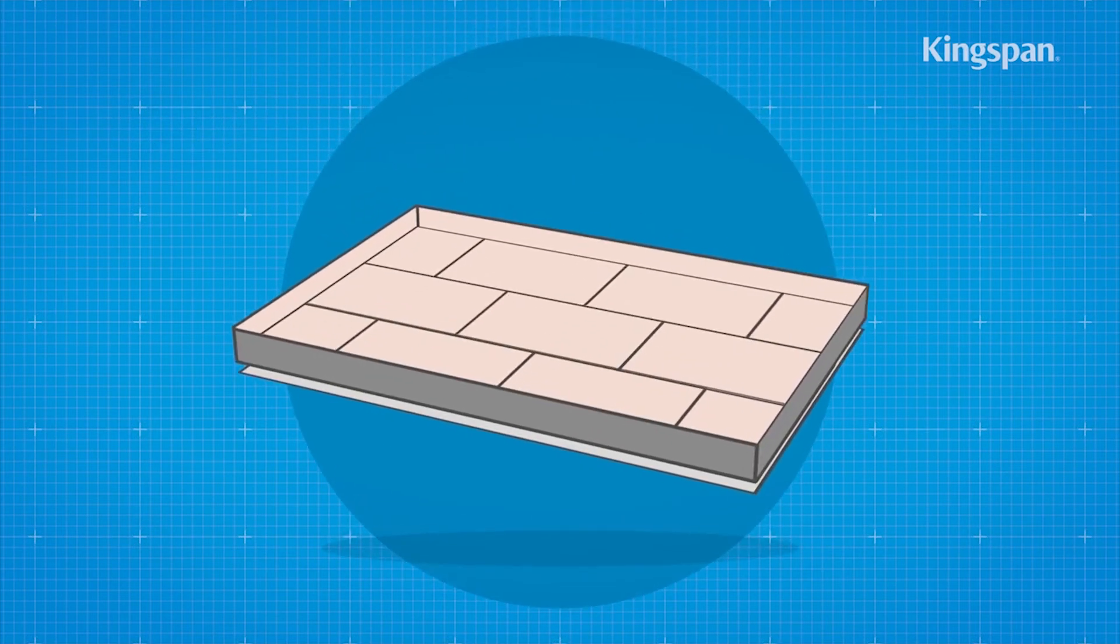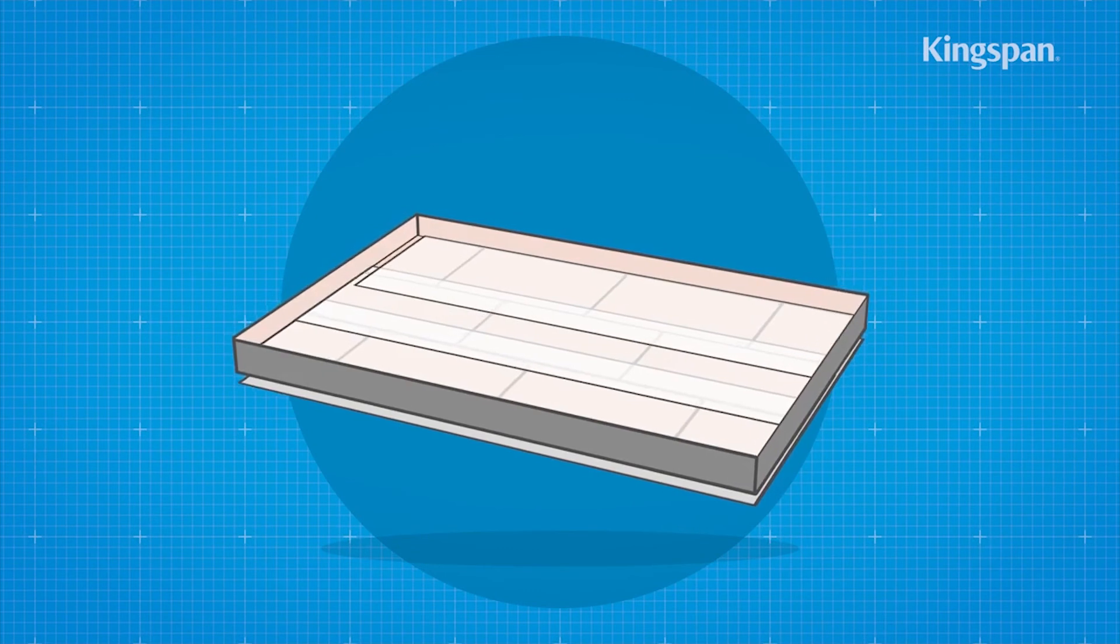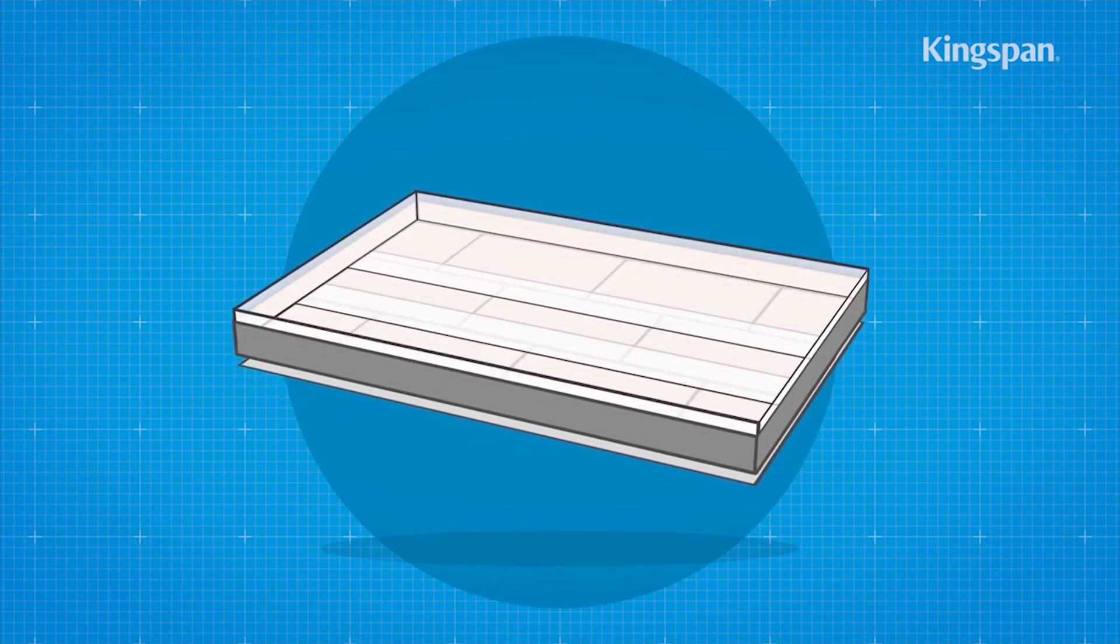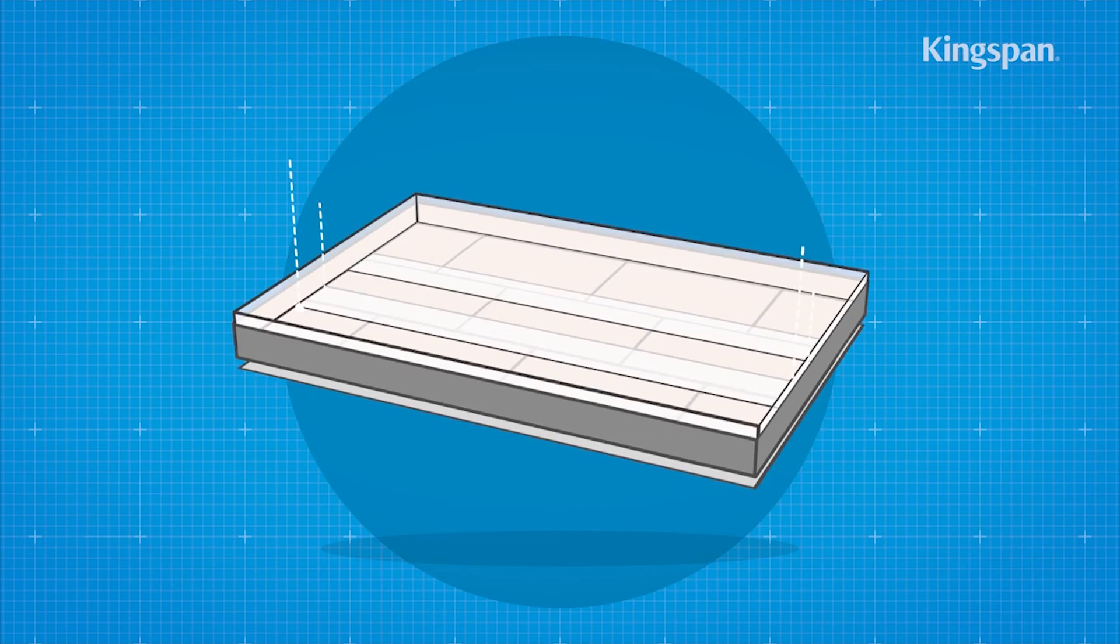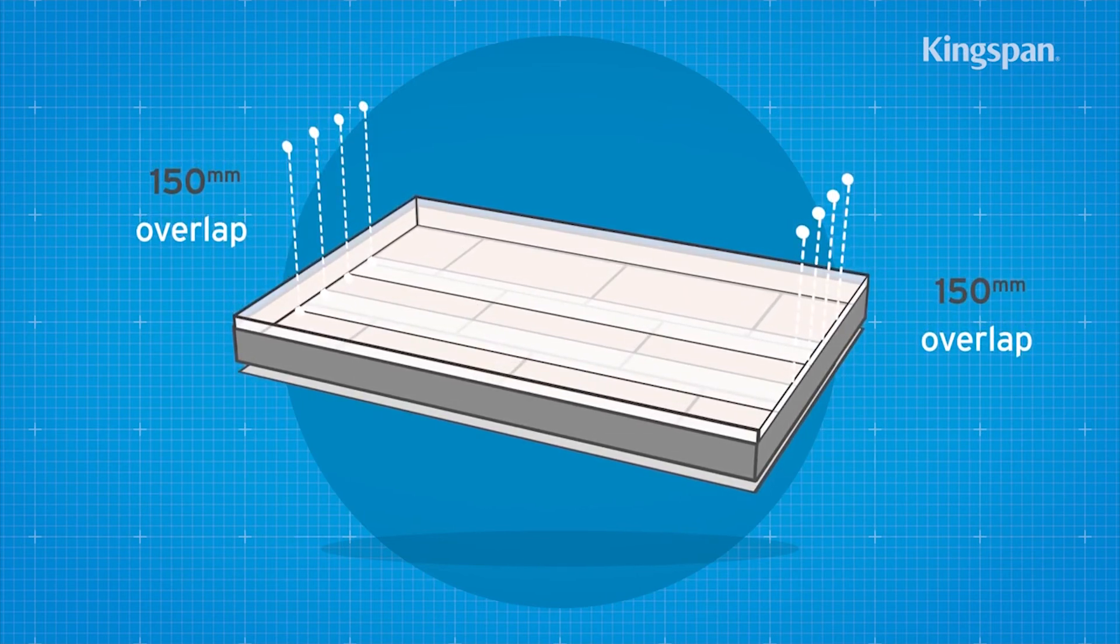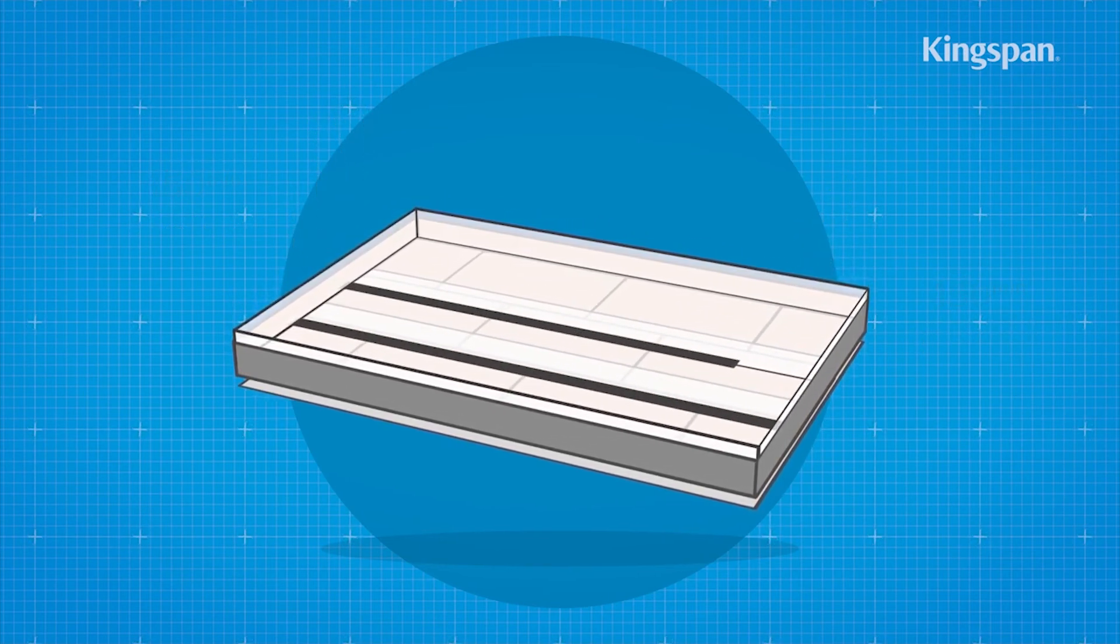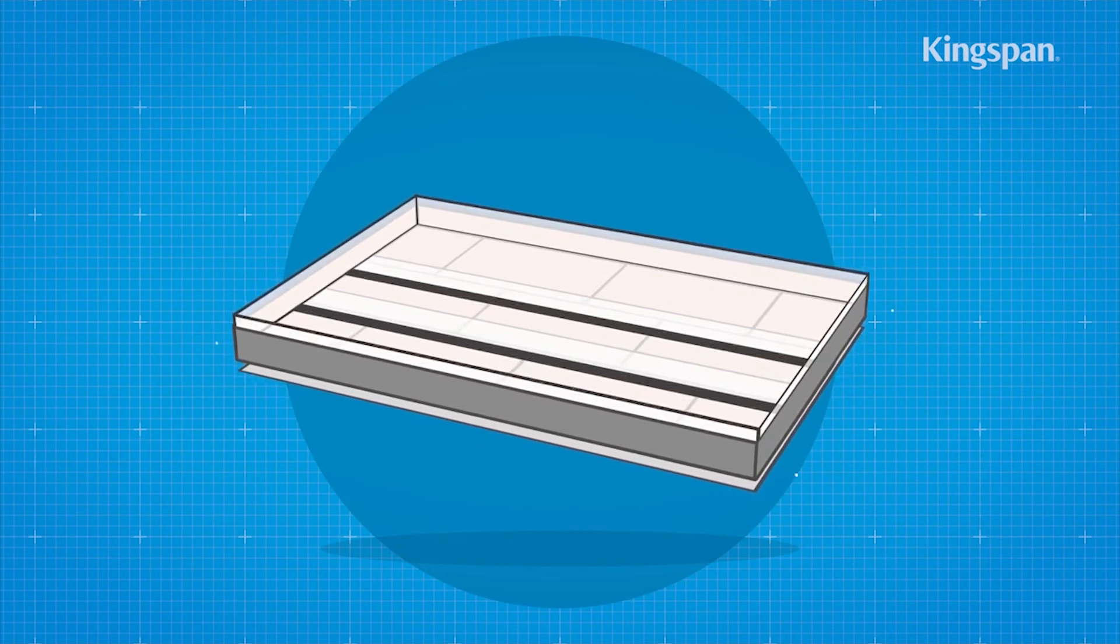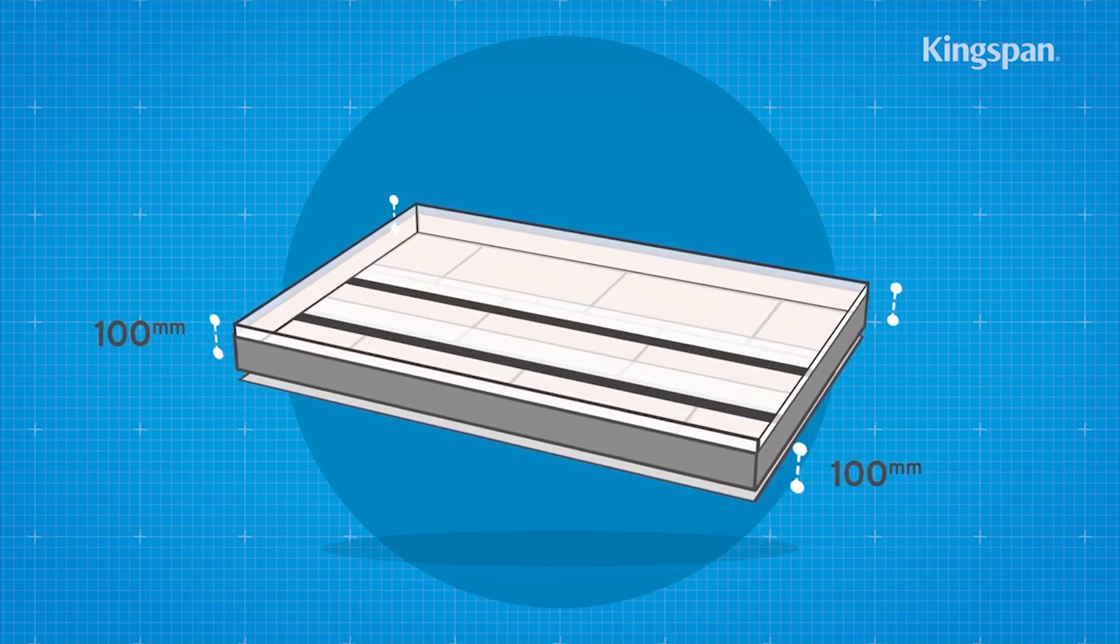Insulation boards should be overlaid with a suitable polythene sheet to act as a vapor control layer. Ensure the polythene sheet has 150mm overlaps taped at the joints and is turned up 100mm at the walls.